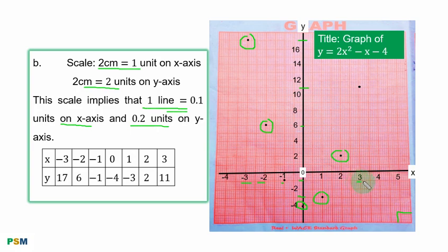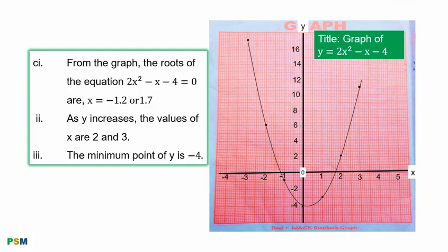This is 3 for S, 11 for Y. You have the point of intersection. Next, is to join the points together. Here, all the points are joined together. We move to C, part of the question.